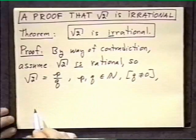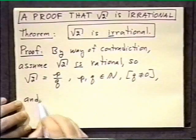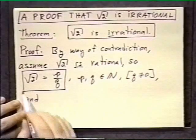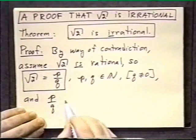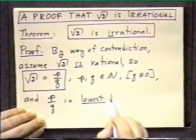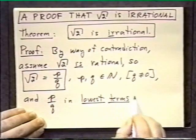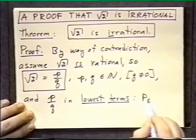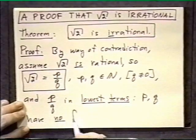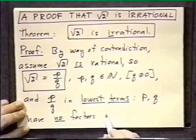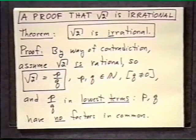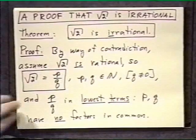Of course, zero is not a natural number. And we will assume that p over q is in lowest terms, which means p and q have no factors in common. This is going to be very important to our proof.